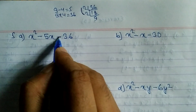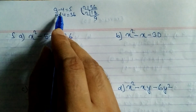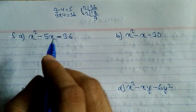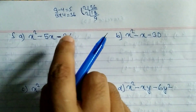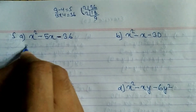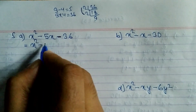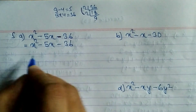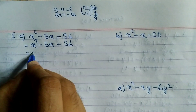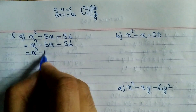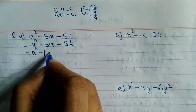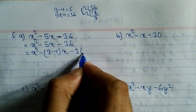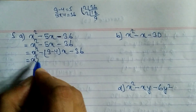We subtract because here is a minus sign. If there is a plus, we add; if there is a minus, we subtract. So we rewrite x² - 5x - 36 as x² - (9 - 4)x - 36, writing 9 minus 4 in the place of 5.